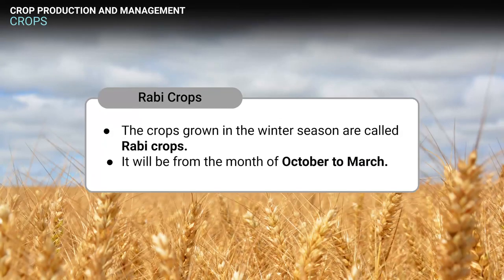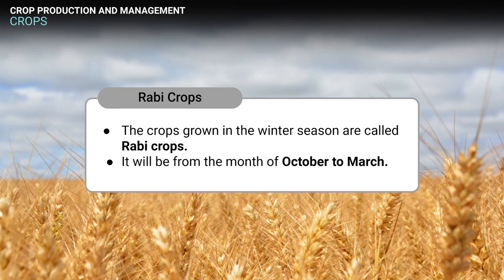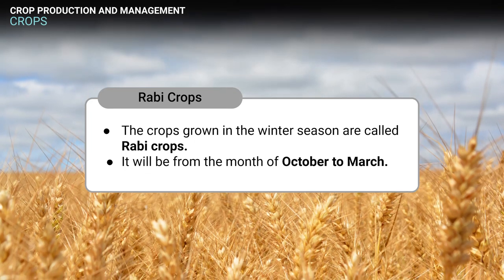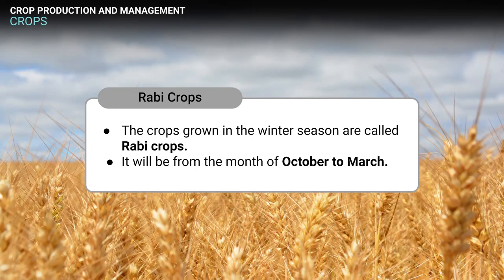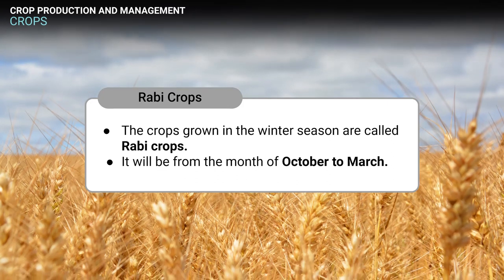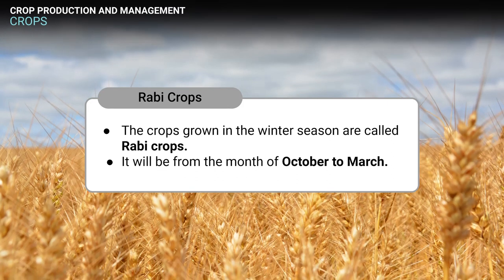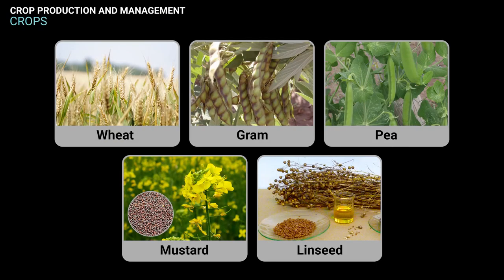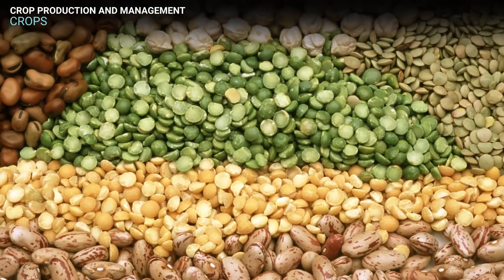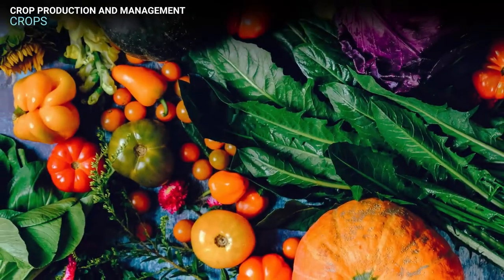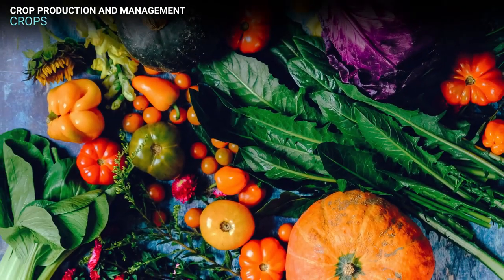The crops which are grown in the winter season are called rabi crops. Their time period is generally from the month of October to March. Examples of rabi crops include wheat, gram, pea, mustard, and linseed. Besides these, pulses and vegetables are grown during summer at many places in India.